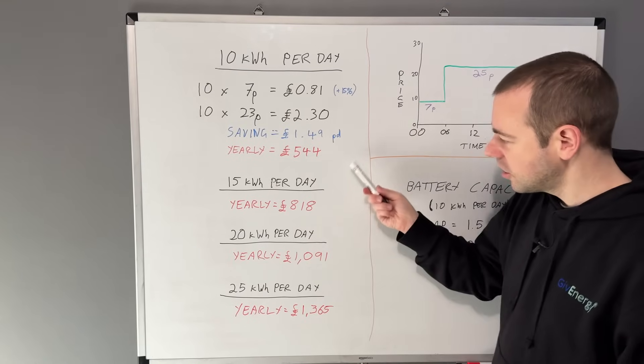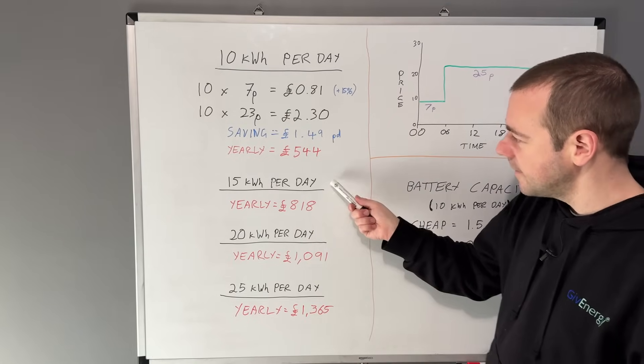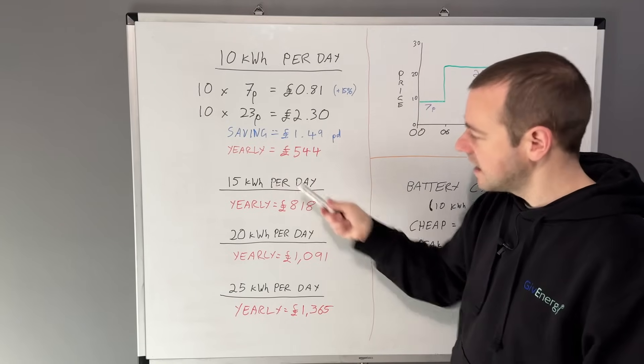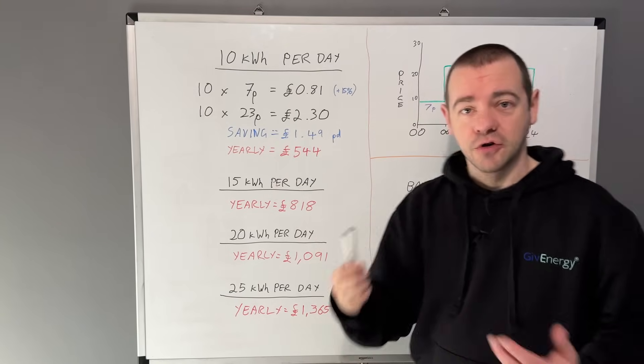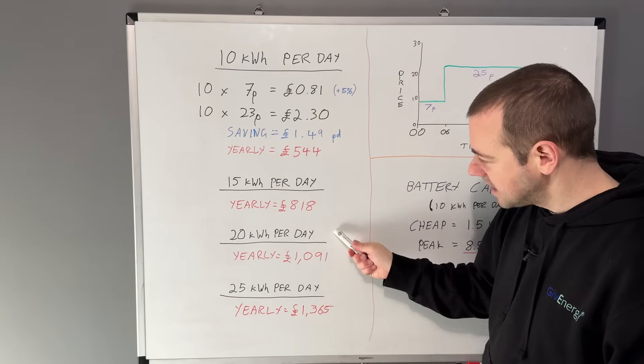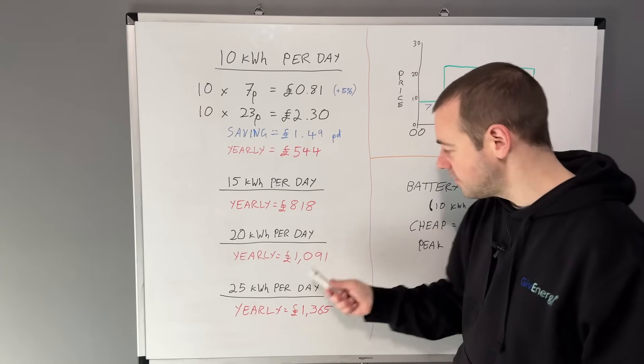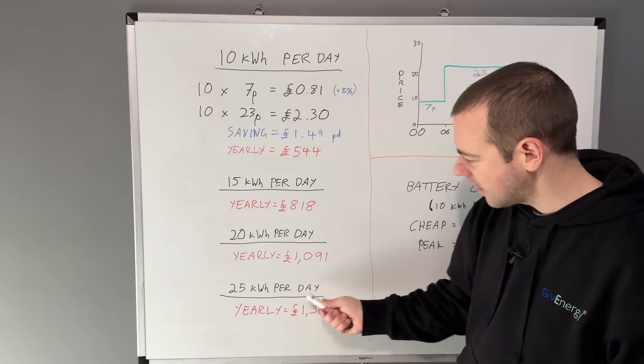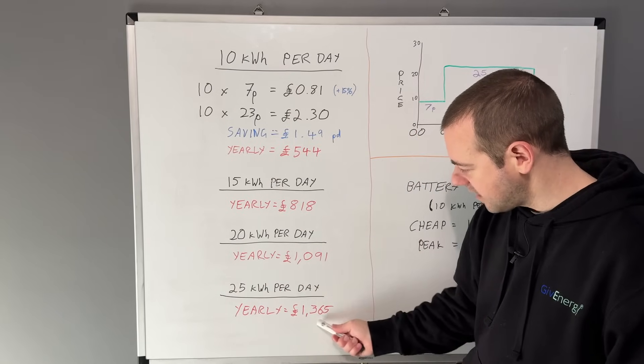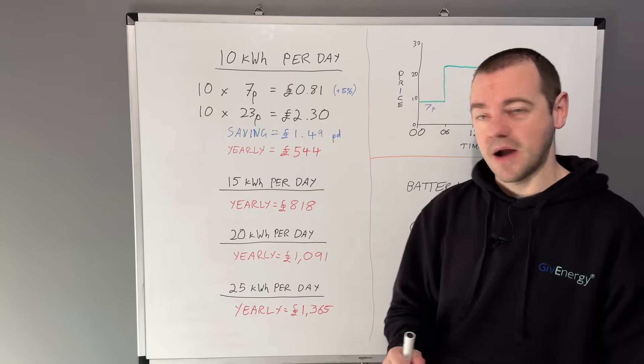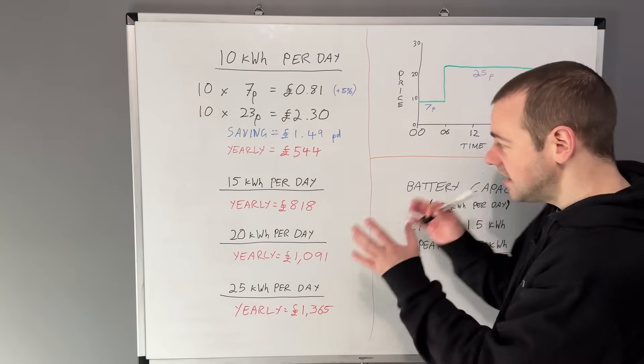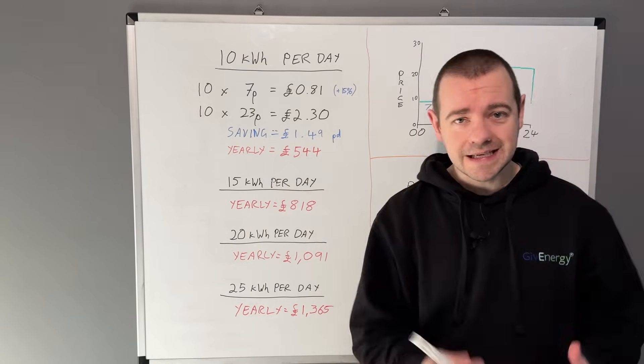I've got a few more examples here. At 15 kilowatt hours per day usage, using the same formula, you'll save £818. At 20 kilowatt hours per day, just over a thousand pounds. And at 25 kilowatt hours per day, you would end up saving £1,365 based on this simplistic formula.